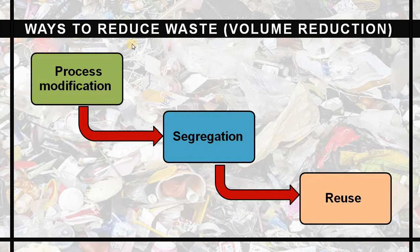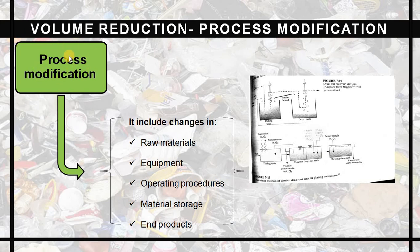There are three ways to reduce waste through volume reduction. The first way is process modification, the second is segregation, and the third is reusing. In process modification, we look at changes in raw materials — for example, if machinery in a particular company has raw material that creates more waste, that material can be changed or equipment can be modified.